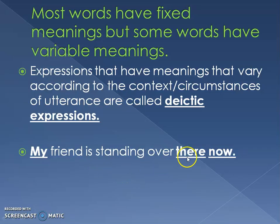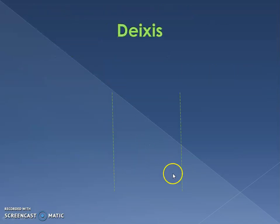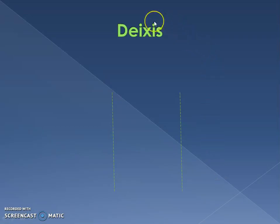'There' could be anywhere — it doesn't have a certain fixed meaning. And 'now' has its meaning at the time of its utterance — the time when it is said. This is what deixis means: a word that has meaning according to context. There are three types of deixis: person deixis, time deixis, and place deixis.